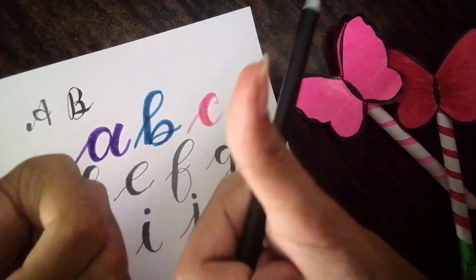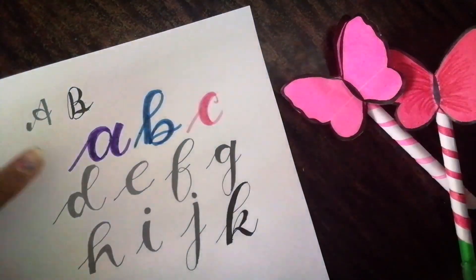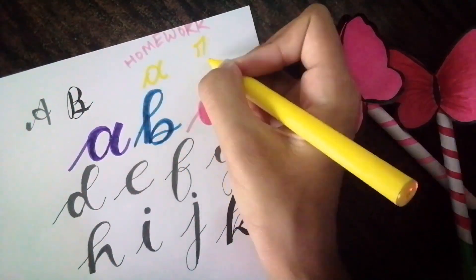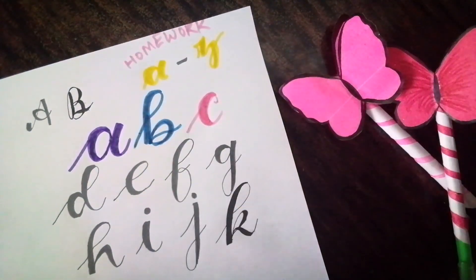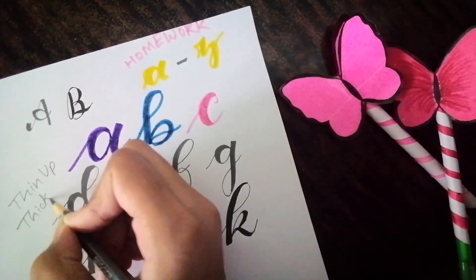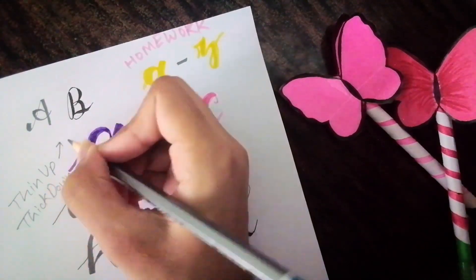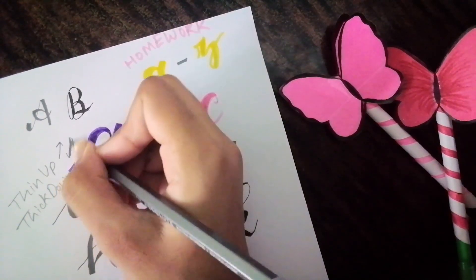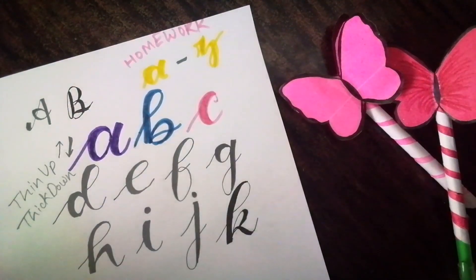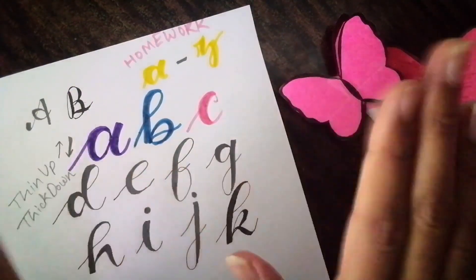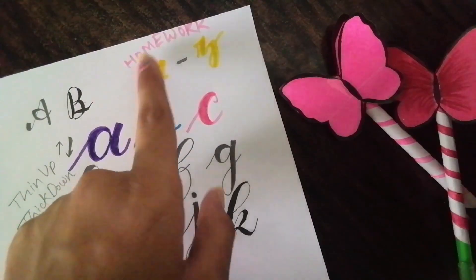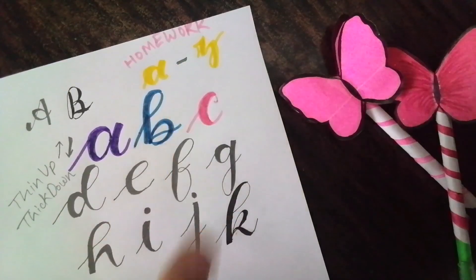So in this video, till here is enough. Let me give you some homework. Your homework is from A to Z. Please don't forget the formula, which is thin up, thick down. I'm reminding you so many times because if you forget this, it's really difficult to write calligraphy because it is the basic and simple formula. Thanks for watching. See you in the next video, and please don't forget the homework. Bye!